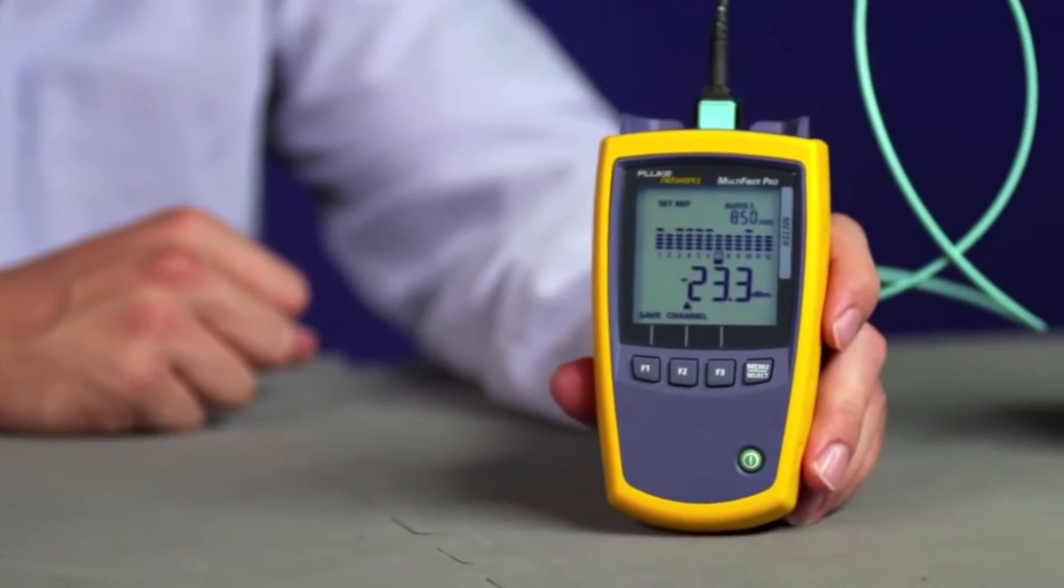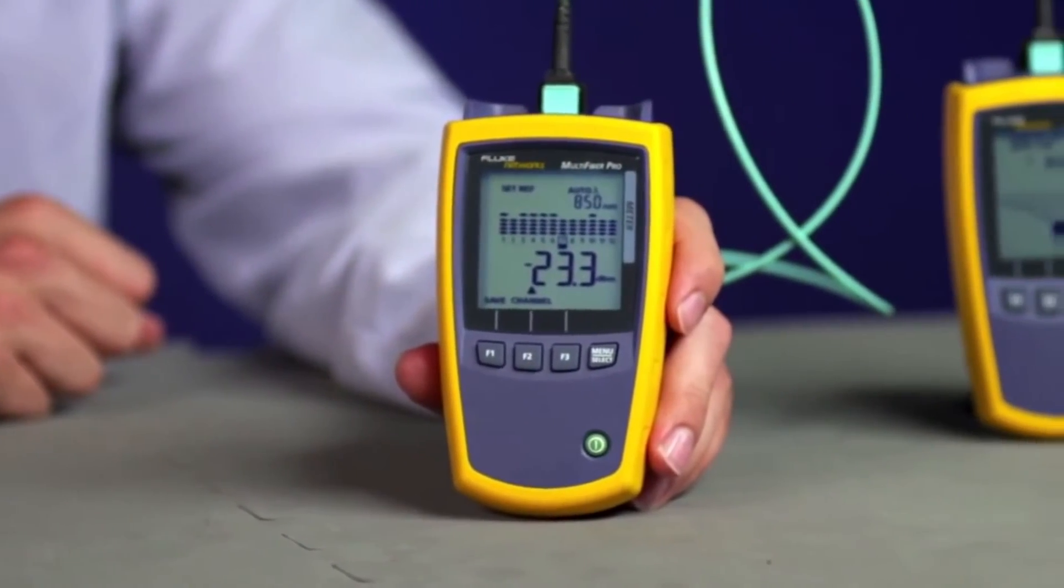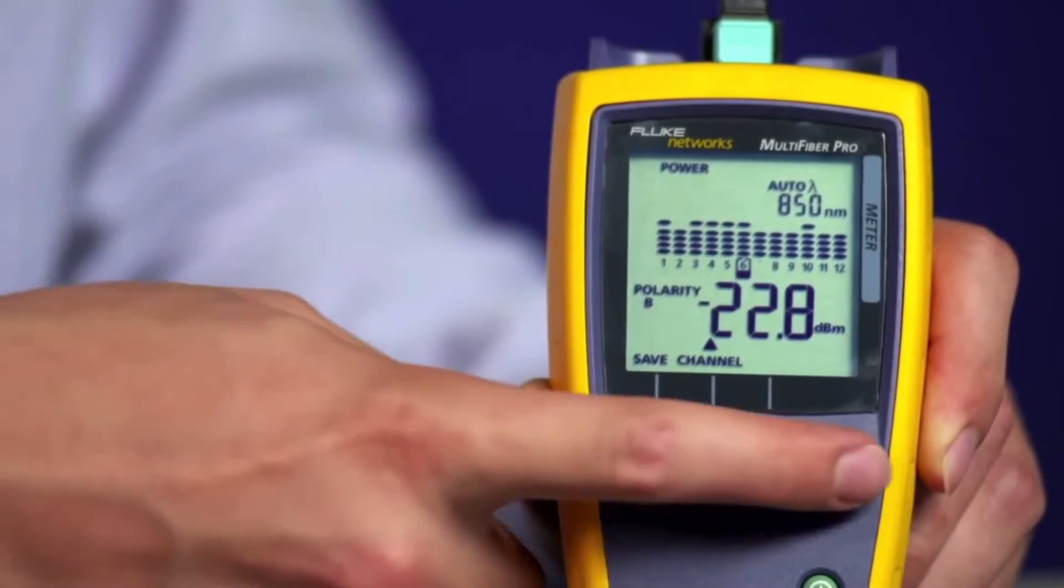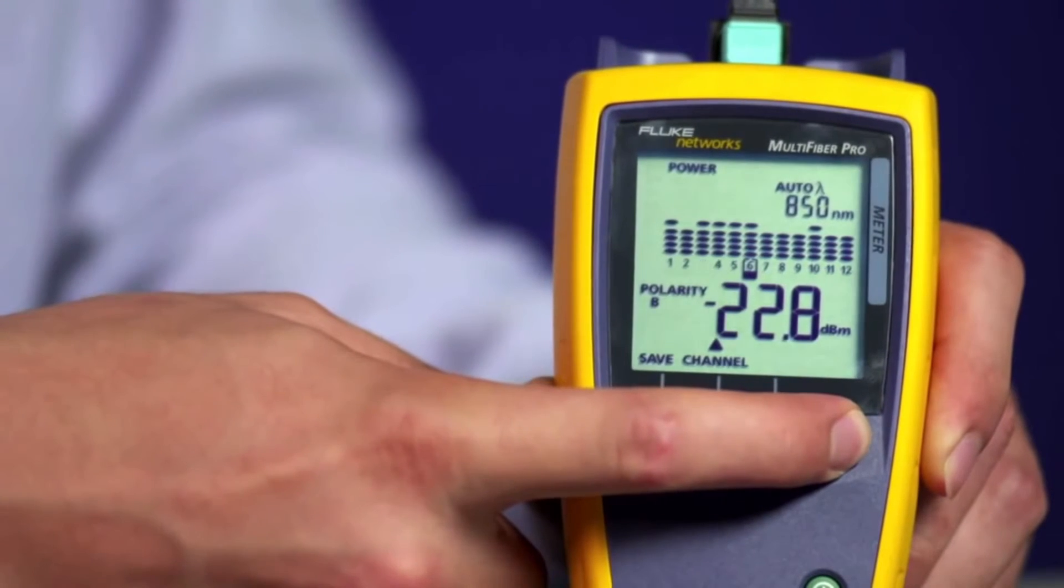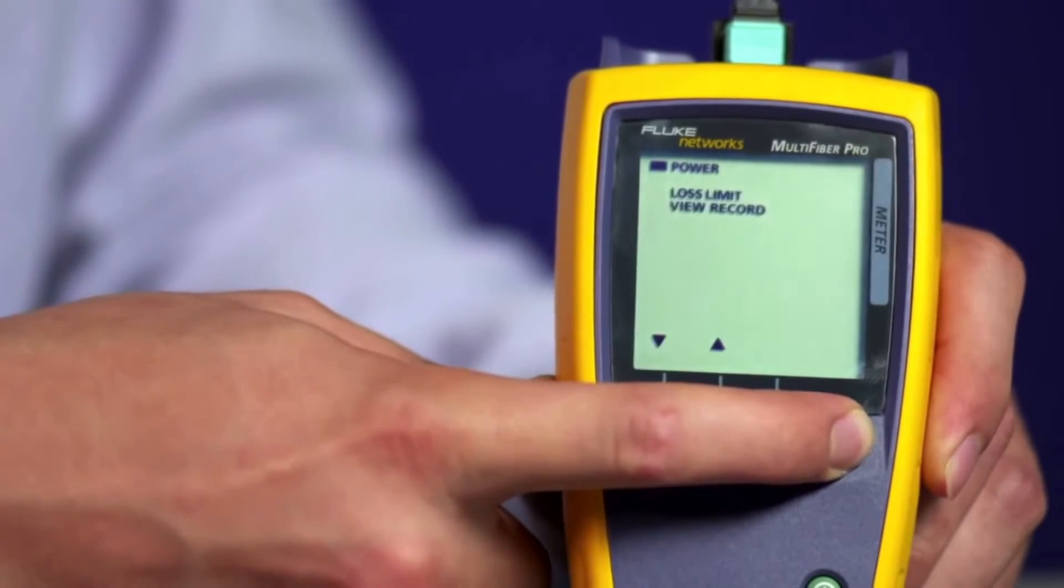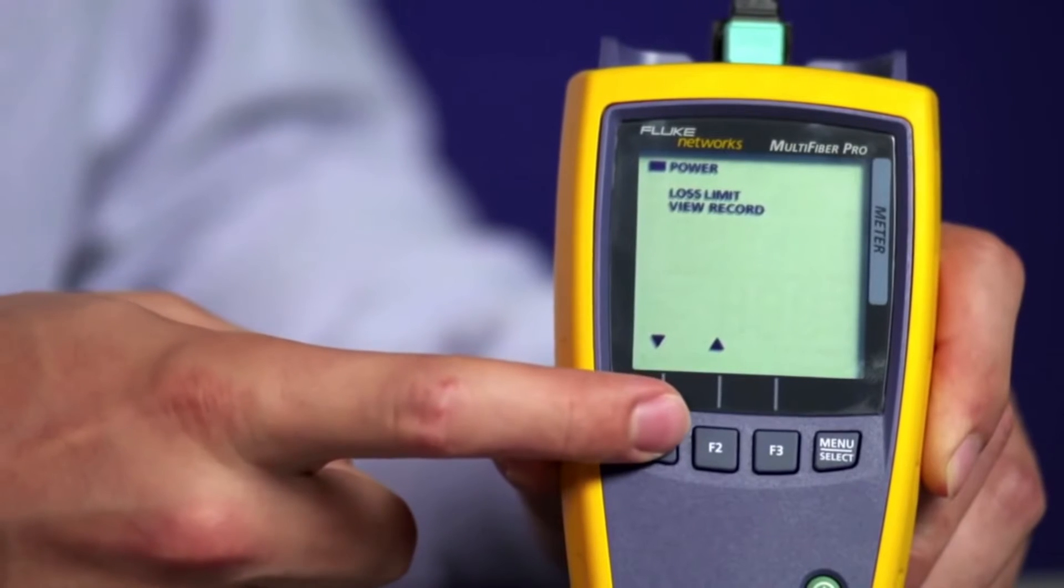After you've set the reference with the supplied MPO test cords, make sure you use the correct loss limit. Press MENU for 3 seconds, then use the arrow keys to move to Loss Limit.